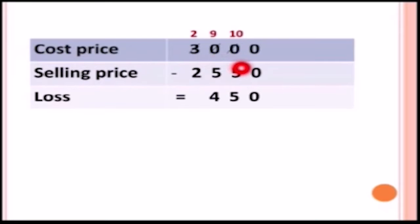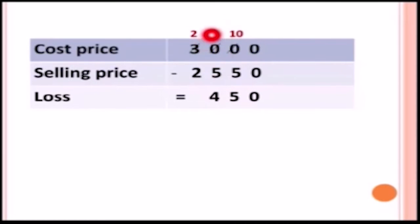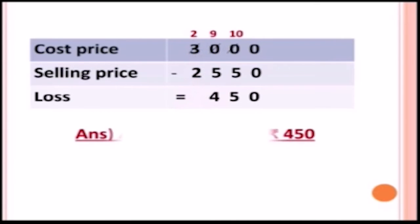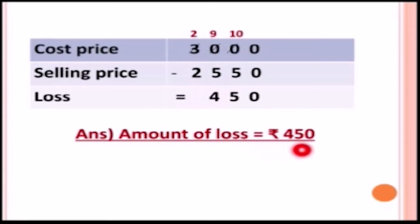Subtracting: zero minus zero is zero. We cannot subtract five from zero, so we take a borrow — ten minus five is five. After returning the borrow we have nine, so nine minus five is four. After returning the next borrow we have two, so two minus two is zero. There is a loss of rupees four hundred fifty.